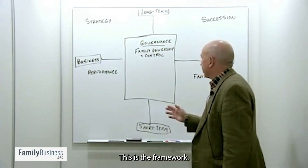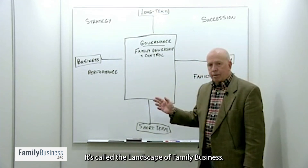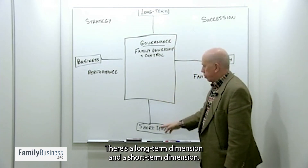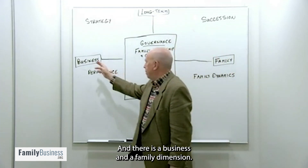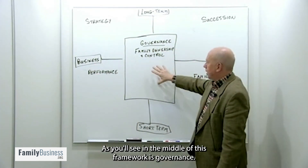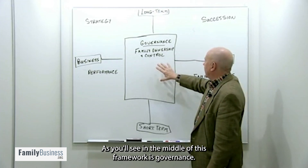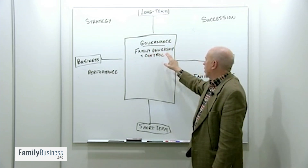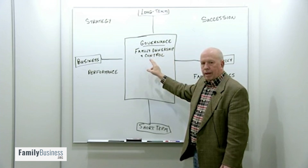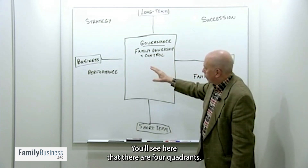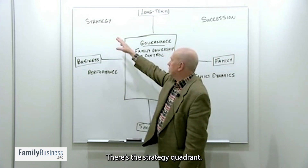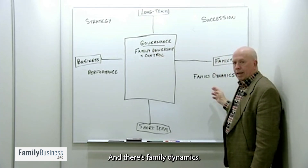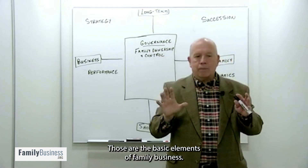This is the framework. It's called the landscape of family business. There are two dimensions to this framework: a long-term dimension and a short-term dimension, and there is a business and a family dimension. As you'll see, in the middle of this framework is governance, and the main important part of governance is that family owns and controls the business. There are four quadrants: the business performance quadrant, the strategy quadrant, the succession quadrant in the long run, and family dynamics. Those are the basic elements of family business.